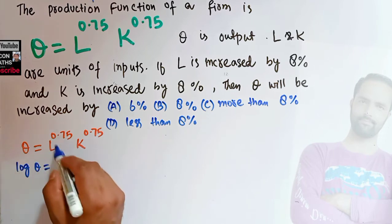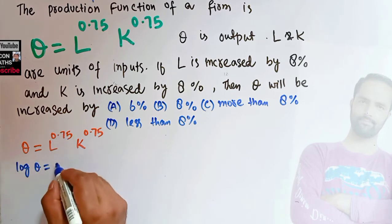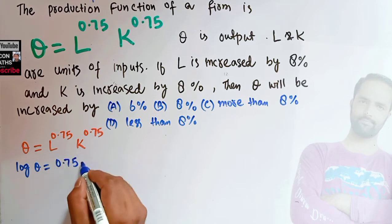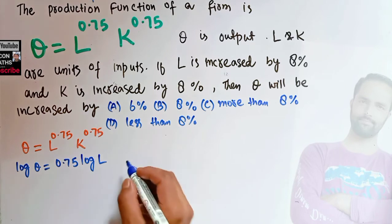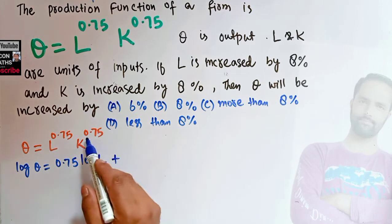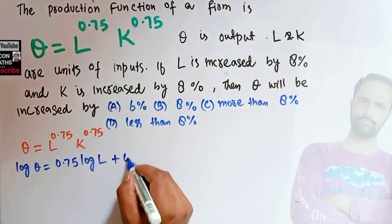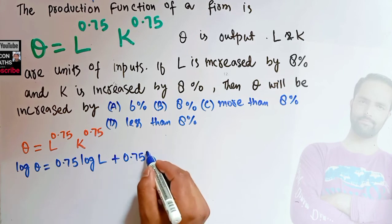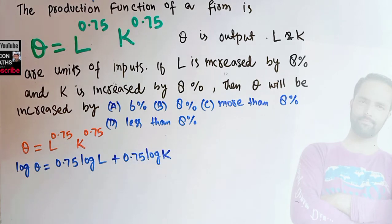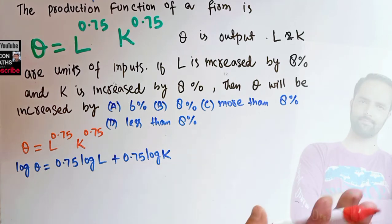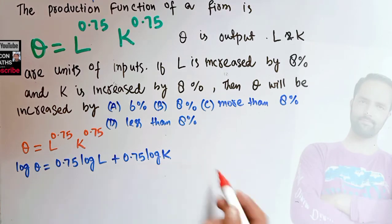...0.75 times log of L — this is from the law of logarithm — plus 0.75 times log of K. I have explained the rules of logarithm in my mathematical lecture series. So I have taken the log; now take the differential on both sides.